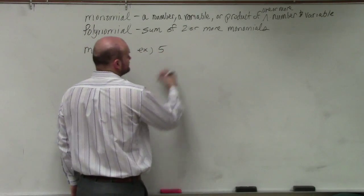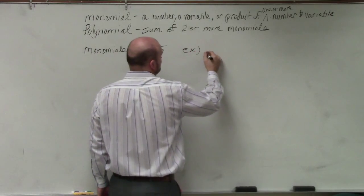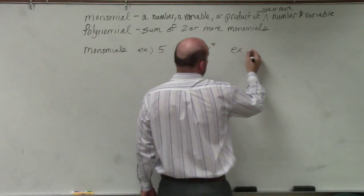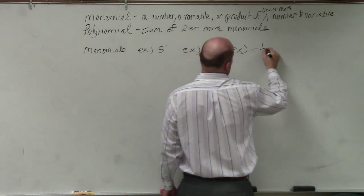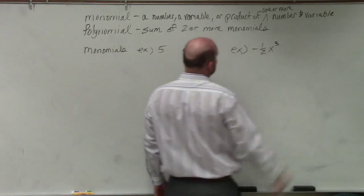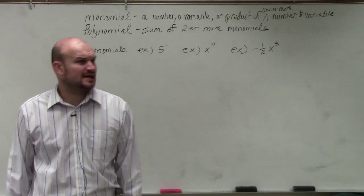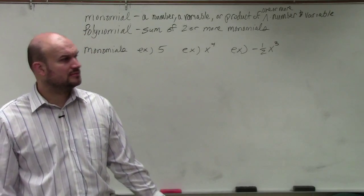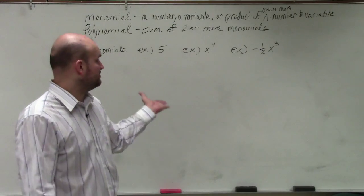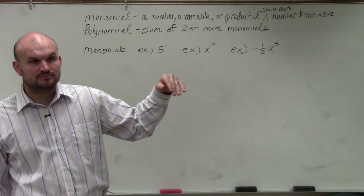Example: 5. Example: x to the fourth power. Example: negative 1/2 x cubed. Does everybody see how those are either a number, a variable, or the product of a number and a variable?